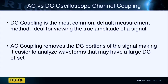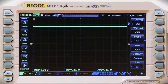Signal coupling deals with the way the waveform's AC and DC components are shown on the oscilloscope's display. Normally DC coupling is used, but there are some waveform types where AC coupling can be beneficial. The coupling setting is found in the individual channel menus and shown at the bottom of the screen for each channel at all times.